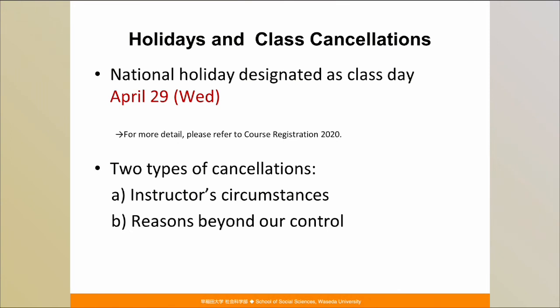The second type of cancellation is due to reasons beyond our control, such as transportation strikes or bad weather. This type would typically affect all classes at the university. Depending on where you live, a strike may not affect you, but please follow the instructions provided by the university. You can find more details about this in the study guide.